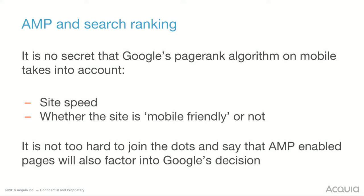It's no secret that PageRank does take into account things such as how fast your website loads and whether or not your site is mobile friendly. There's a tool you can go to check how fast your site is and whether it's mobile friendly. And it wouldn't be too hard to say that in the future, Google will start biasing AMP content versus non-AMP content.